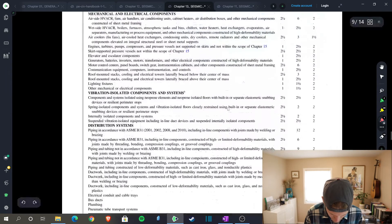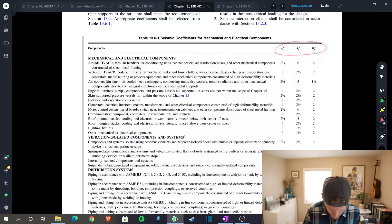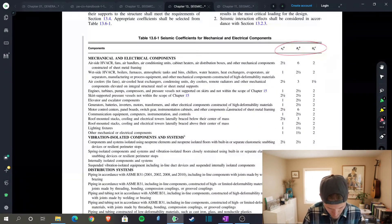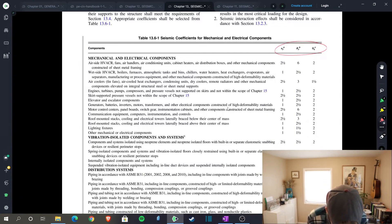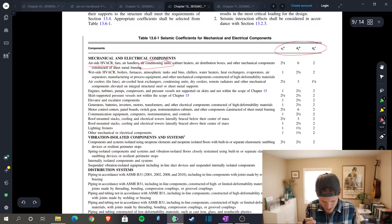Distribution systems, vibration isolated components and systems, mechanical and electrical components. And what we have today is an air side HVAC unit, because if you look further you'll see that is defined as an air conditioning unit, which is what we have. So we get to use an A of two and a half, an R of six, an Omega of two.